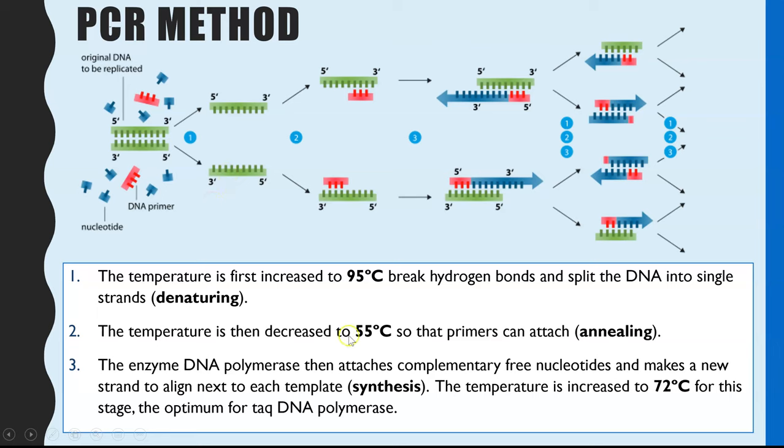Step two, you then drop the temperature down to 55 degrees C. And the reason for that is it allows any primers that happen to collide with the complementary sequence at the end of the DNA fragment that you're cloning, it allows them to align, and it's now cool enough for hydrogen bonds to reform so that the primer is held in place.